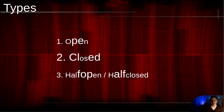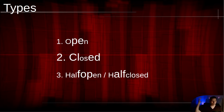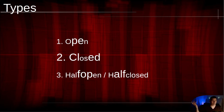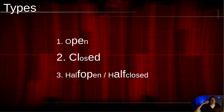With studio headphones there are three types: open headphones, closed headphones, and half-open or half-closed headphones. Open headphones, as the name says, are open to the outside. Because of that you get better spatial acoustics. Because sound can go out and there's no reflection inside the headphone, it's a little bit healthier for your ears and your ears won't get tired as soon.